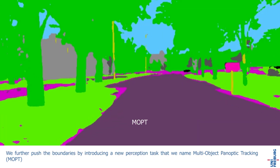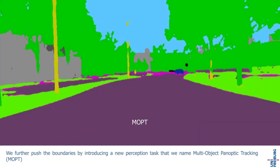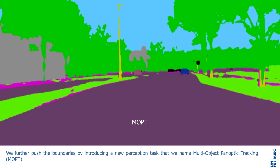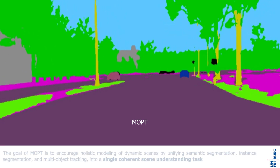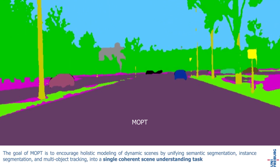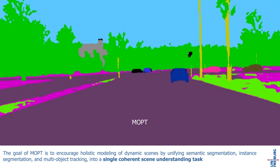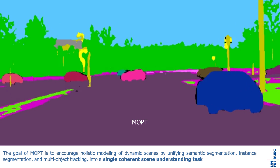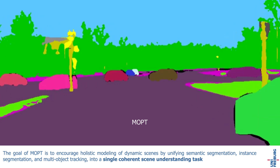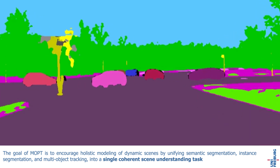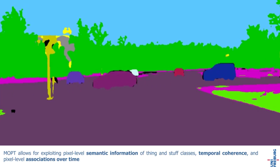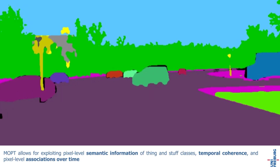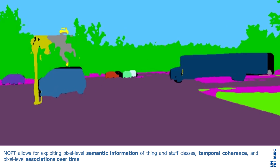We further push the boundaries by introducing a new perception task that we name Multi-Object Panoptic Tracking. The goal of MOPT is to encourage holistic modeling of dynamic scenes by unifying semantic segmentation, instance segmentation and Multi-Object Tracking into a single coherent scene understanding task. MOPT allows for exploring pixel-level semantic information of thing and stuff classes, temporal coherence and pixel-level associations over time.